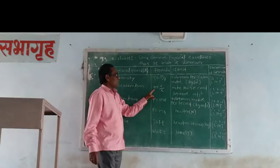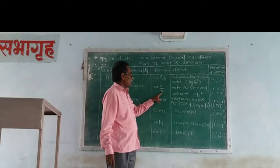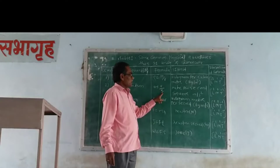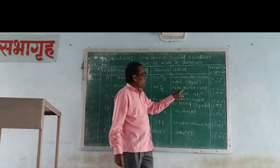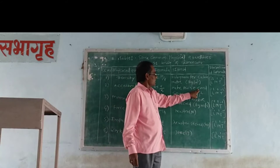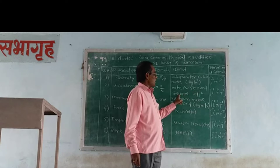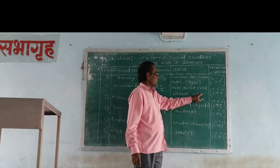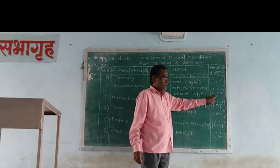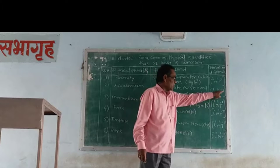Second, acceleration. The formula is A equal to V divided by T. The unit is meter per second squared, and the dimension is L1 M0 T minus 2.